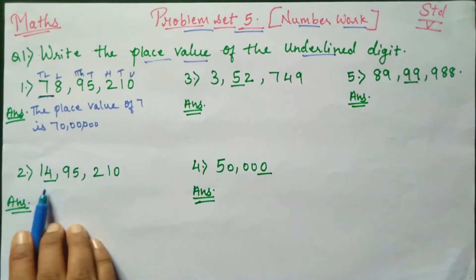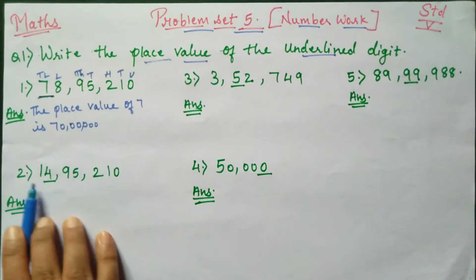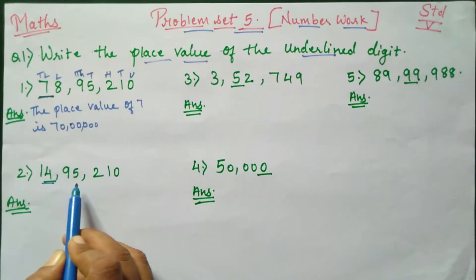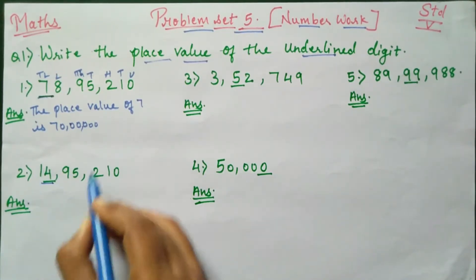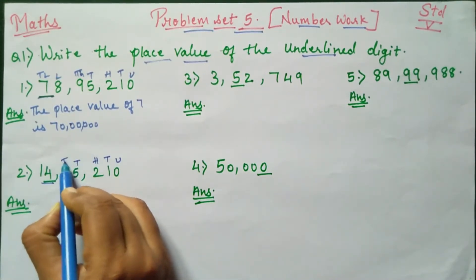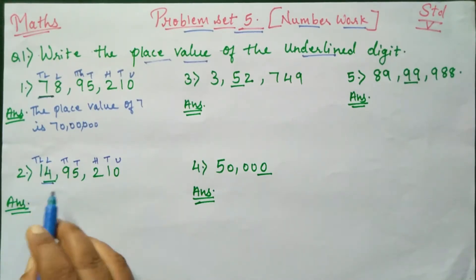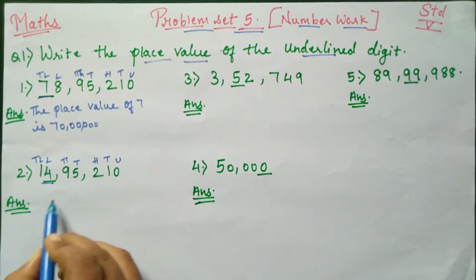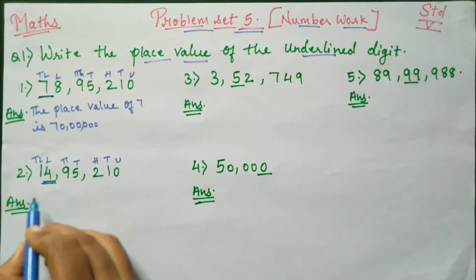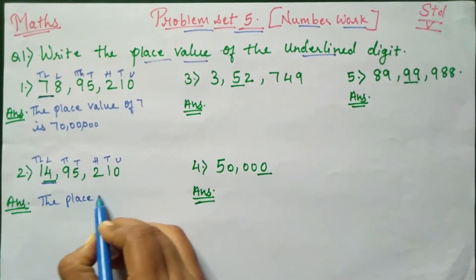Second one: 14,95,210. Here they have underlined number 4. So to find out the place value, write first all the place values — unit, tens, hundreds, thousands, ten thousands, lakhs, and ten lakhs above the numbers. And then we will get the underlined digit answer is 4 lakhs. Therefore, the place value of 4 is 4 lakhs, that is 4,00,000.